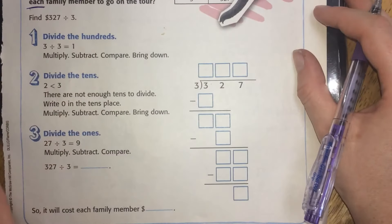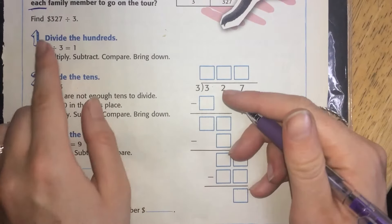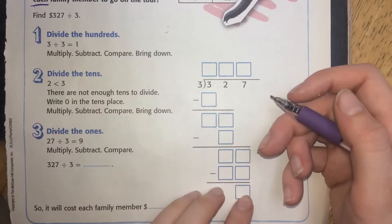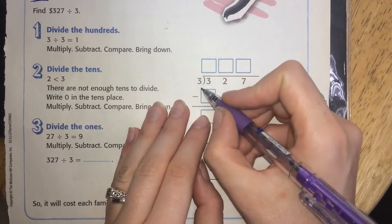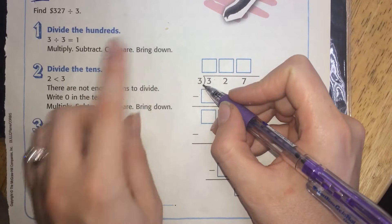They've set the problem up for us here. We're going to follow the steps: divide, multiply, subtract, bring down. Multiply, subtract, compare, bring down.